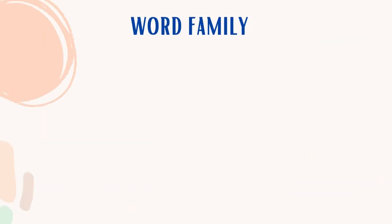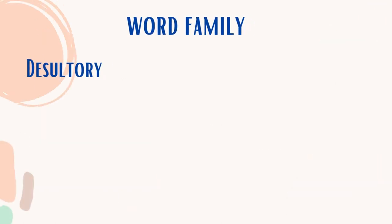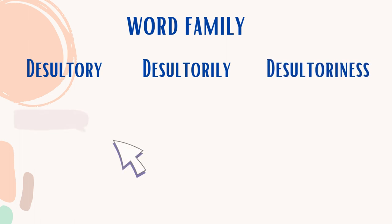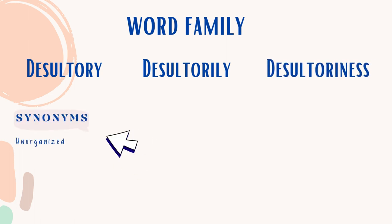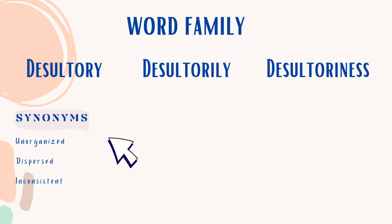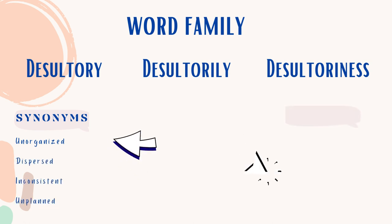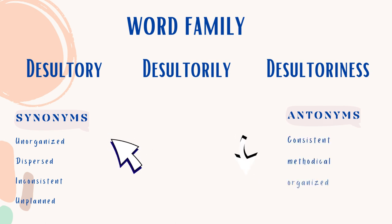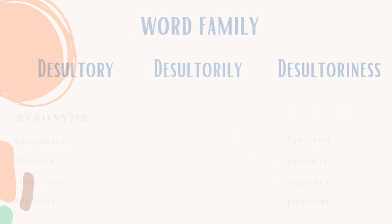Word family: desultory, desultorily, desultoriness. Synonyms: unorganized, dispersed, inconsistent, unplanned. Antonyms: consistent, methodical, organized, persistent.